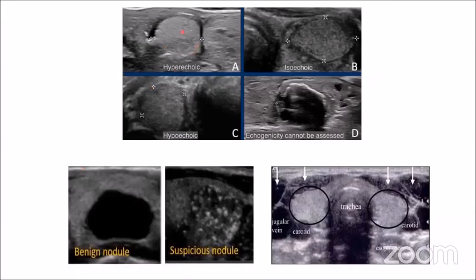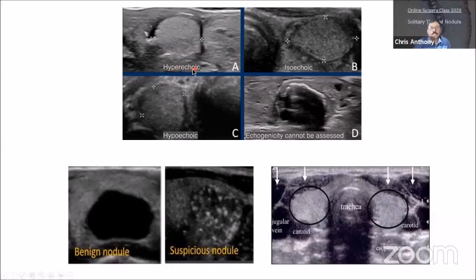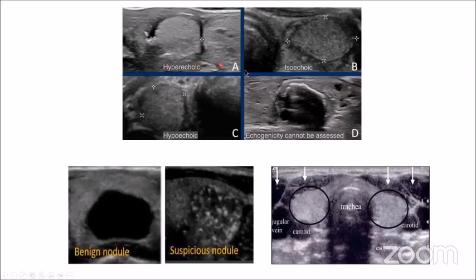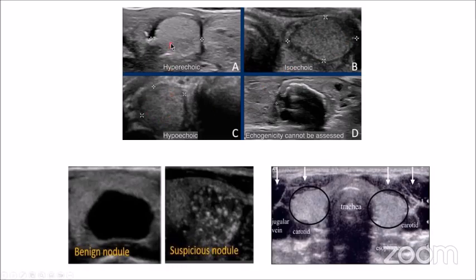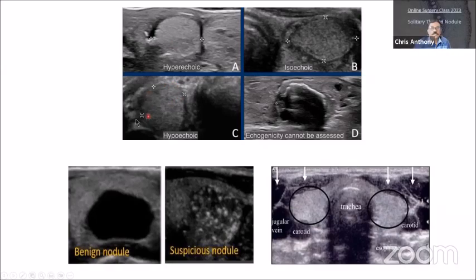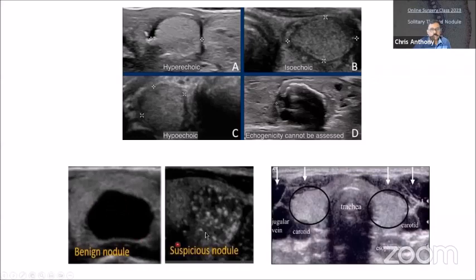These are ultrasound pictures. Hypoechoic nodules are shown here. This is called the halo sign — a feature of a benign nodule. A benign nodule is hypoechoic and very well defined with no calcifications inside. Multiple microcalcifications within the tissue of a nodule are suspicious of a malignant nodule; the border is not well defined and there is no halo ring around the nodule.